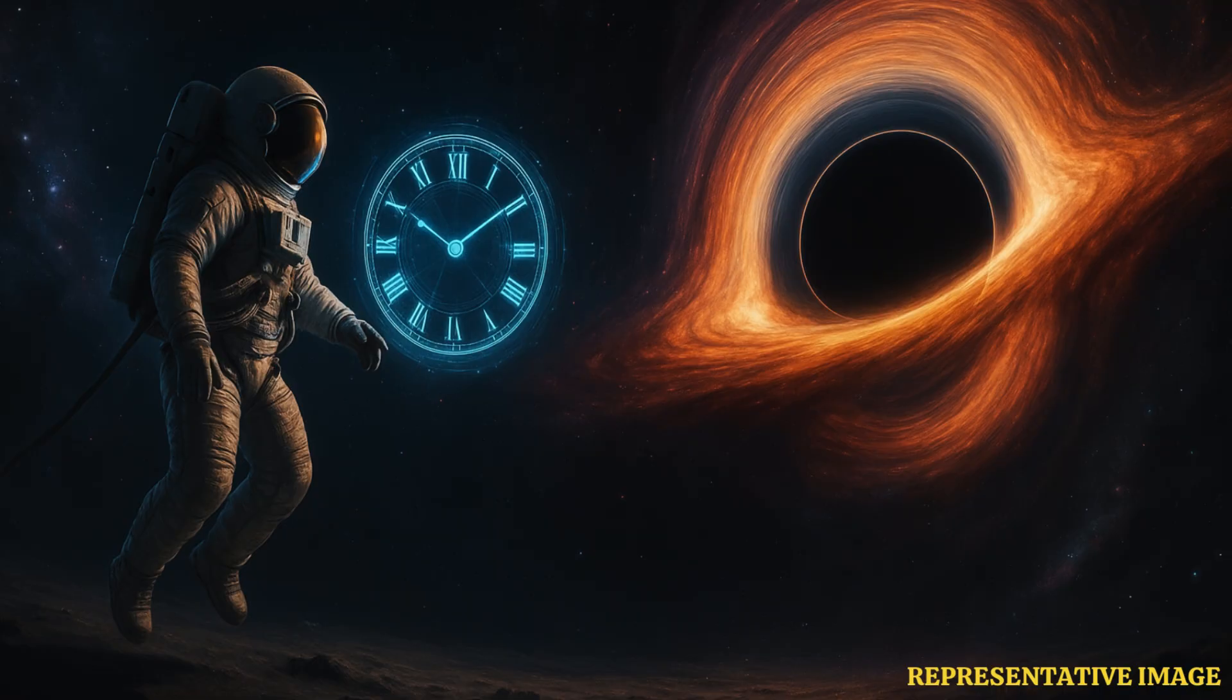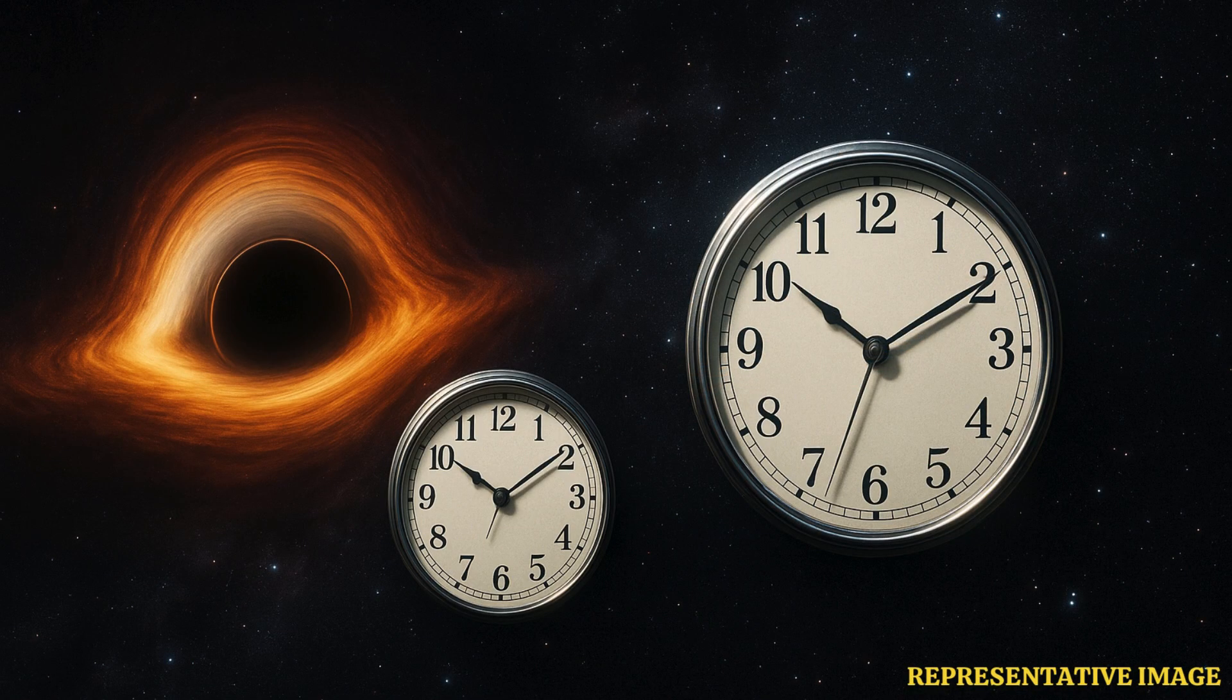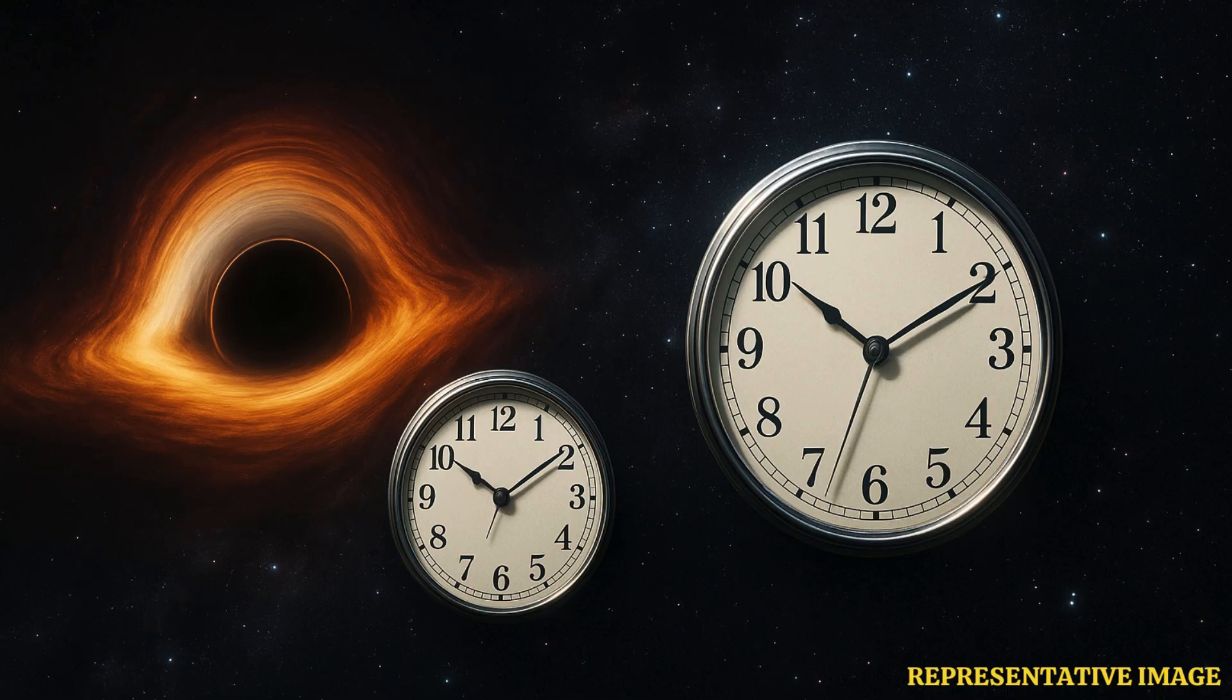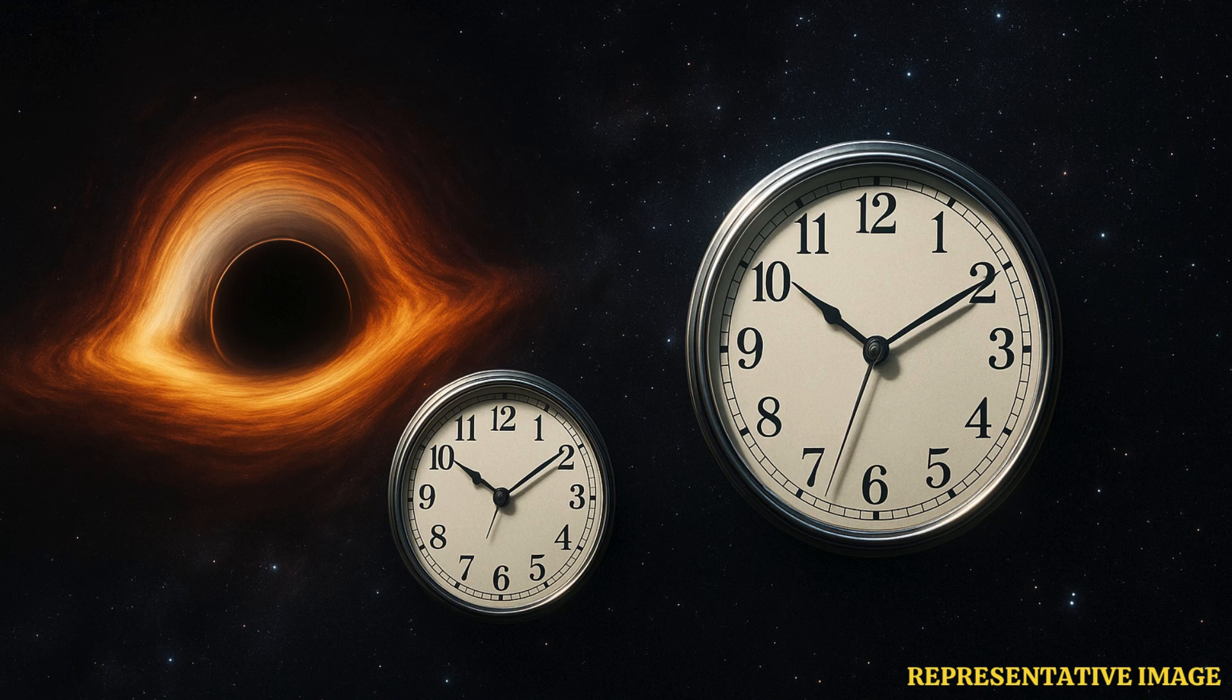If you were near a black hole, your watch would appear to tick normally for you. But to someone watching from a safe distance, your clock would seem to slow down. Seconds for you could look like minutes, hours, or even centuries for them.